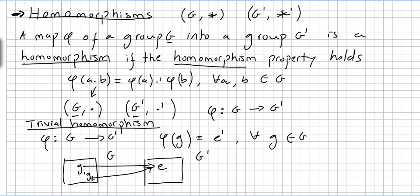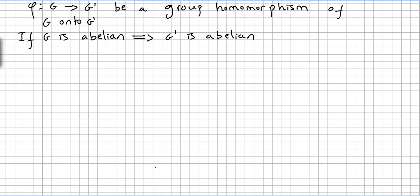Of course, no information about the structure of G or the structure of G prime is gained from the other group using this trivial homomorphism. Now, we have a group homomorphism of G onto G prime — a surjection from G to G prime. We will show: if G is abelian, then G prime must be abelian.